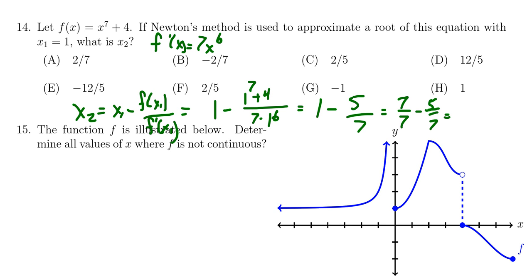And we see that our approximation is going to be 2 sevenths. That is, x2 is choice A.